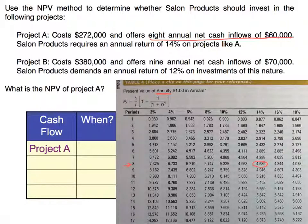When you're using these tables, the factors that you're looking up incorporate the compounding of interest, the interest rate, and the periods. And if you're into fancy formulas — if you're a finance person — there's a formula to actually calculate the factor directly.